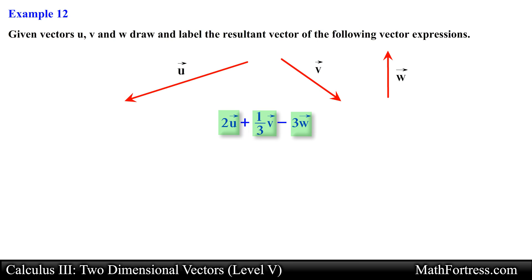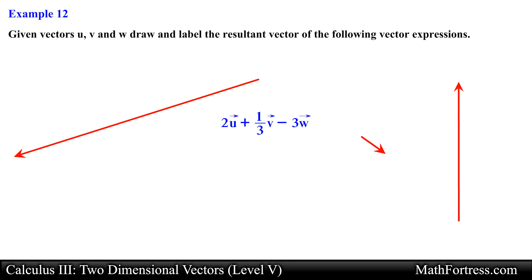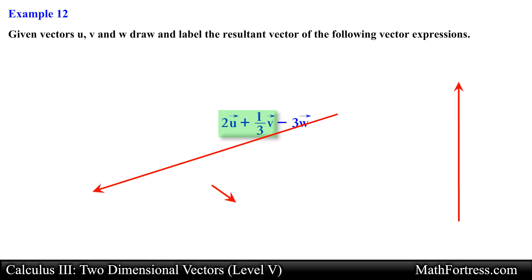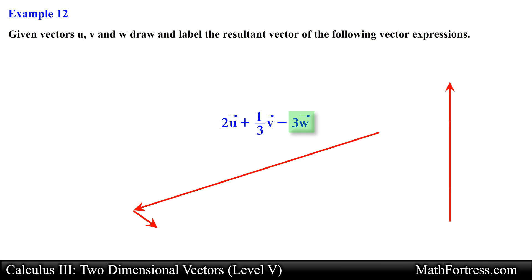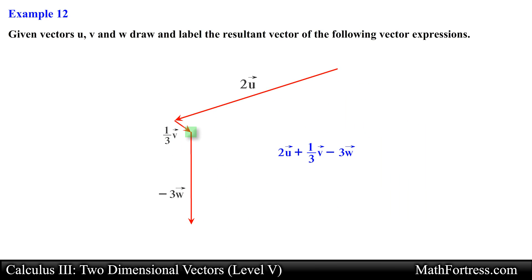Here we are asked to carry out a scalar multiplication, a sum, and difference of vectors. We first draw the scalar multiples: for vector U we double the length, for vector V we scale it to one third of its original length, and for vector W we triple its original length. Next we add vector 2U with vector one-third V using the tail to tip method. Then we take vector 3W, flip it in the opposite direction, and align its tail with the tip of vector one-third V. The resulting vector is drawn from the tail of vector 2U to the tip of vector 3W.